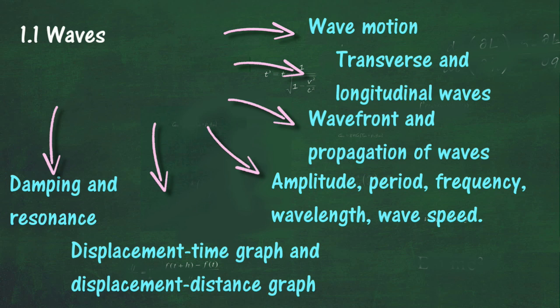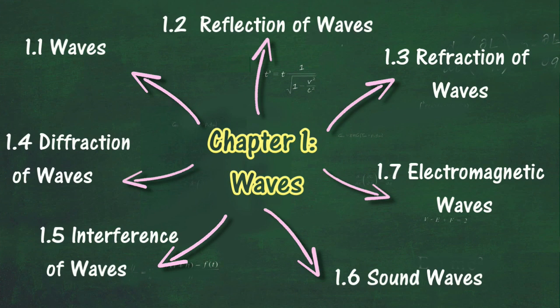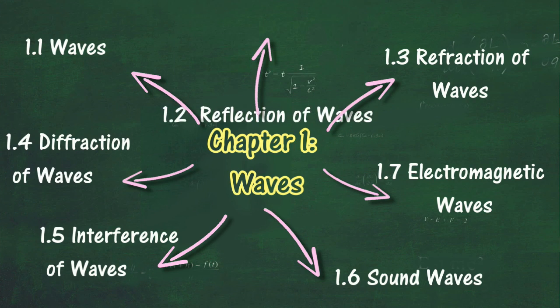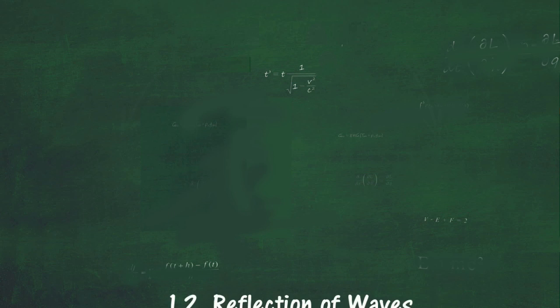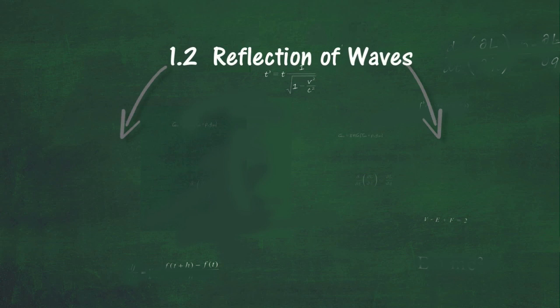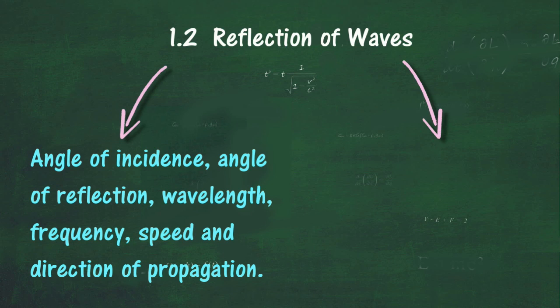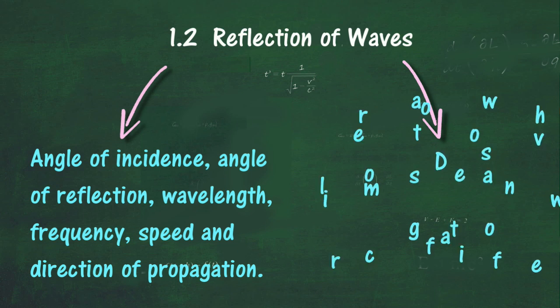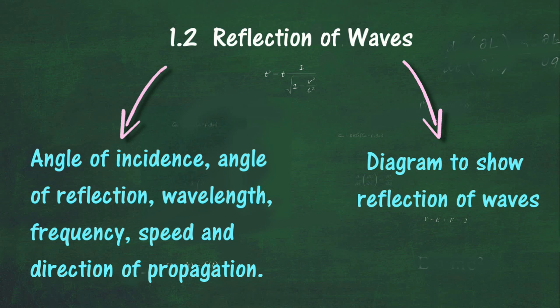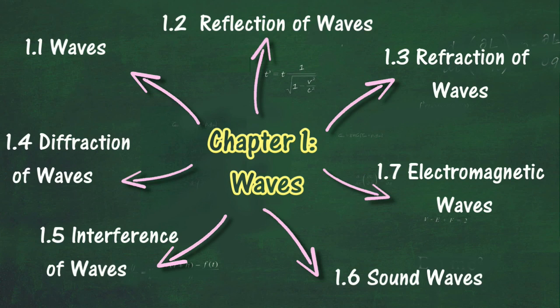Describe resonance in an oscillating system. In Section 1.2, we will learn about reflection of waves. At the end of this section, you should be able to describe reflection of waves in terms of the angle of incidence, angle of reflection, wavelength, frequency, speed, and direction of propagation, and draw a diagram to show reflection of waves.